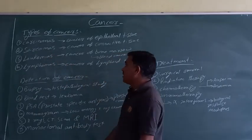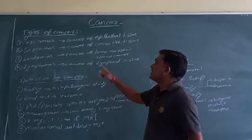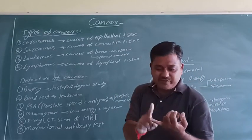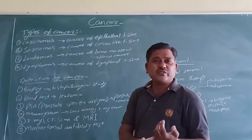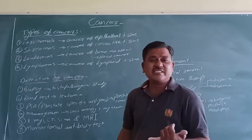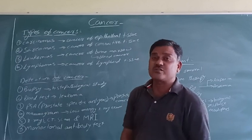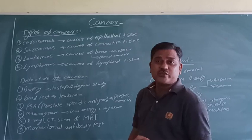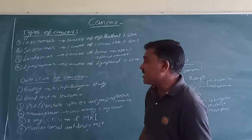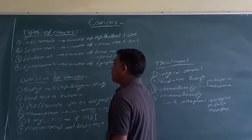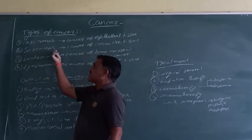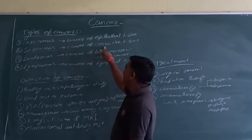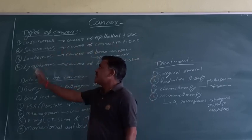Second type: sarcomas. Sarcomas is the cancer of connective tissue. For example, blood is a connective tissue; cartilage is a connective tissue. Bone cancer is a sarcoma because bone is a connective tissue. Adipose tissue — all these are connective tissues. Depending on the presence of which type of tissue is affected, they are differentiated. Cancer of connective tissue is called sarcomas.